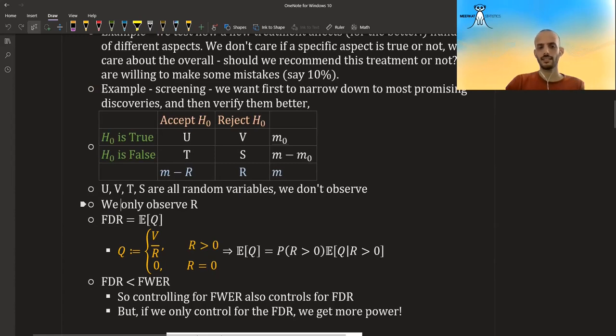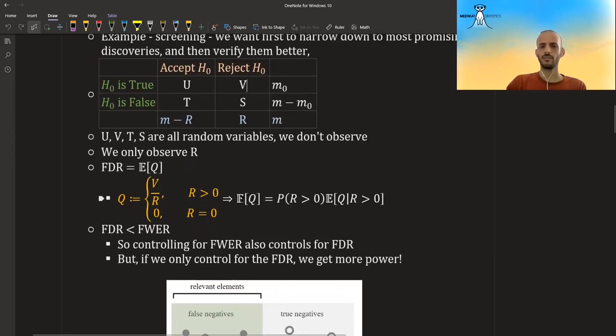And the false discovery rate is defined as the expectation of Q, where Q is V divided by R. So V is the number of false positives that we made, basically, where H0 was true, but we rejected it. So this is the number we rejected out of all of the discoveries we made. And you can also write this like this. It's very easy to show, because we can use conditional probability to divide it into the two cases. One where R is equal to zero times the value of Q, which will be zero, so this term will cancel out, plus all the cases where R is greater than zero times the value of this. So we can also get to this expression over here, which is also mentioned in the original paper.